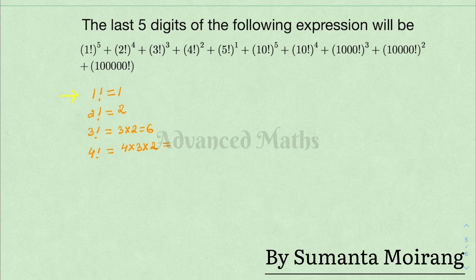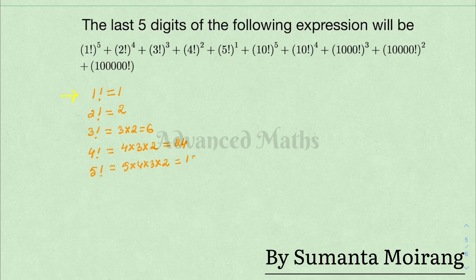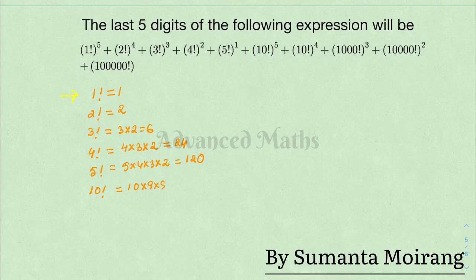Next, 5 factorial: 5 into 4 into 3 into 2 into 1 equals 120. Then 10 factorial: 10 into 9 into 8 into 7 into 6 into 5 into 4 into 3 into 2 into 1.